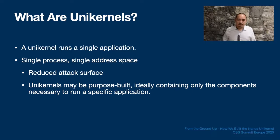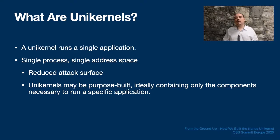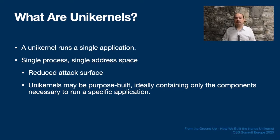So, what are unikernels anyway? I'll give some exposition for those new to the concept. A unikernel is a type of OS kernel that runs a single application. While mainstream general-purpose operating systems support multiple running processes, each with their own address space, multiple users, and even separate namespaces for partitioning a system into containers, a unikernel just supports a single process and program address space.